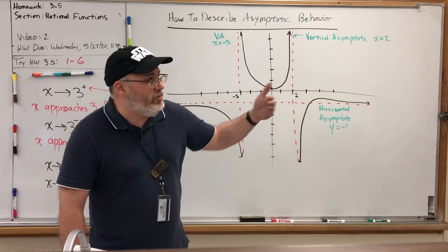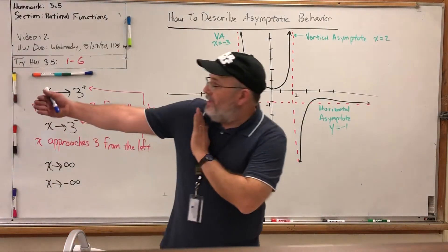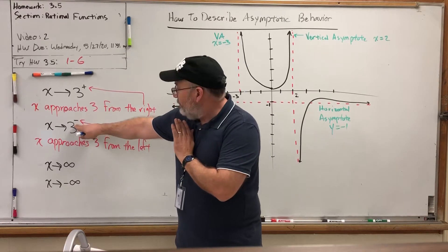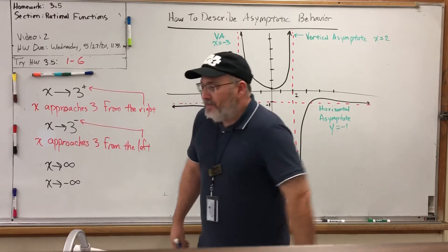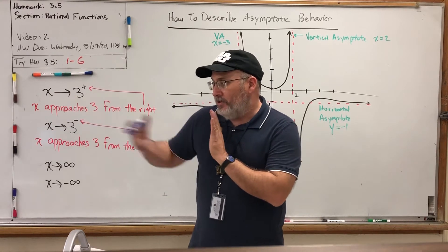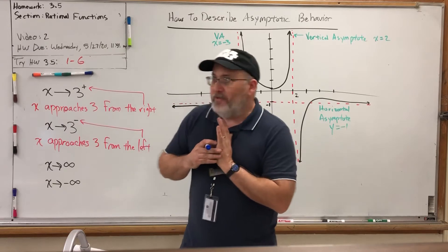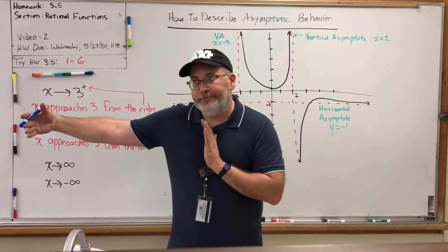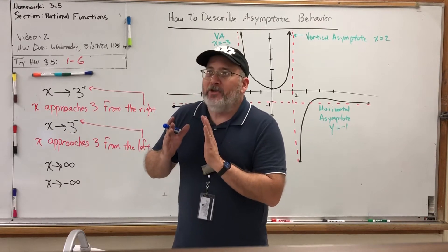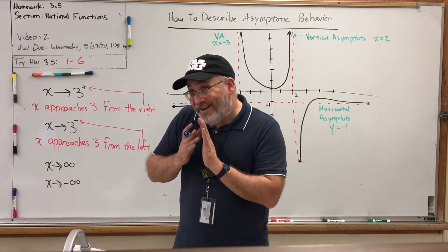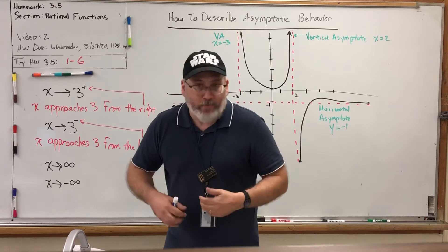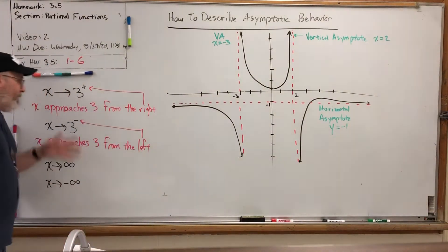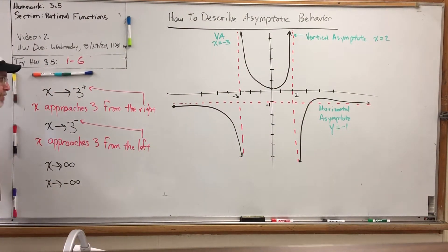Coming in from the right means you have greater numbers that are getting smaller. Coming in from the left means you have lesser numbers that are getting bigger. For example, if I were approaching 3 from the left — the symbol being a negative sign in the exponent — that means I've got numbers less than 3 that are getting closer. Give me a number less than 3: 2. Give me a number still less than 3 but closer: 2.9, then 2.99. The real numbers are so densely packed that you can always get closer without ever actually getting there, so approaching something is a legitimate concept.